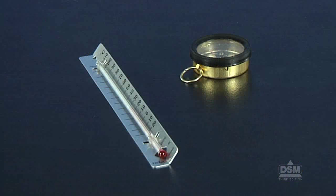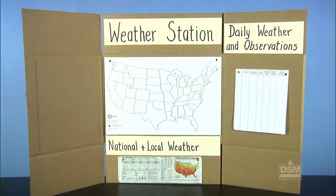To prepare for Session 2, each student will need his or her copy of Activity Sheet 2. Each team of two will need a thermometer, compass, and their weather station.